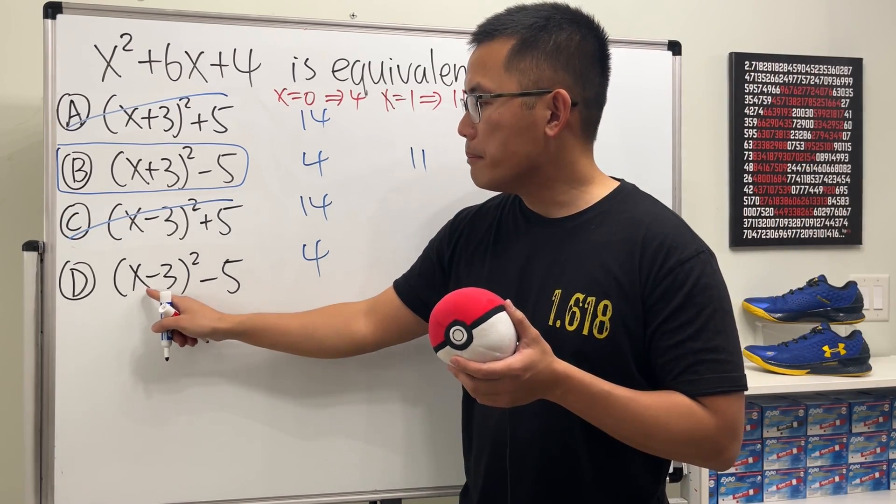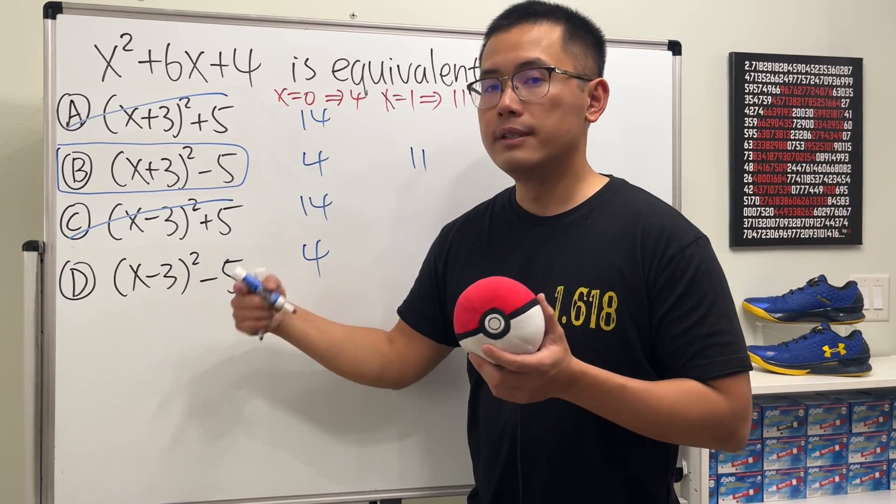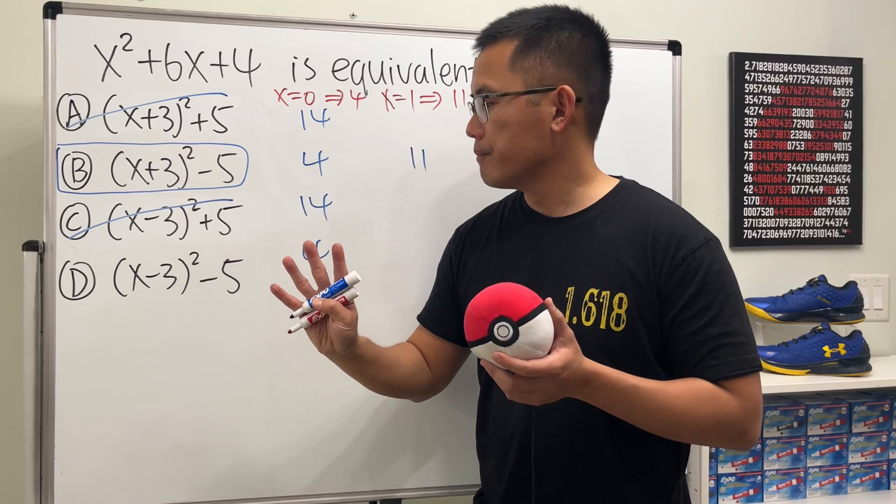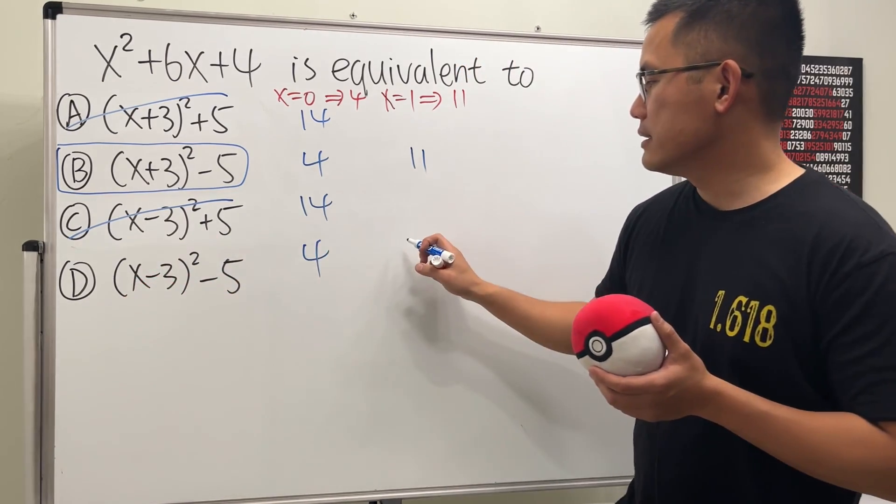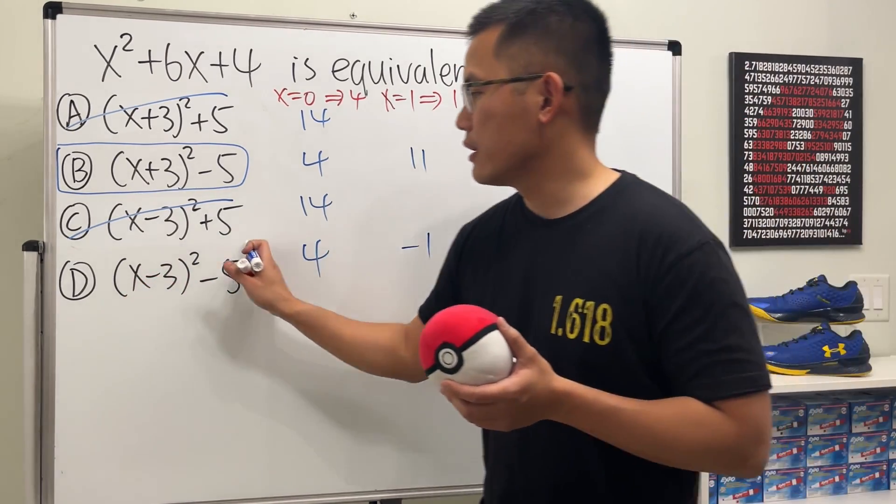If we put 1 right here, 1 minus 3 is negative 2. Square down, we get 4. Yeah, and then 4 minus 5 is negative 1. So we can get rid of that.